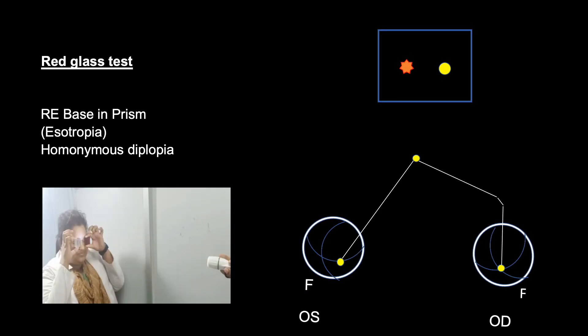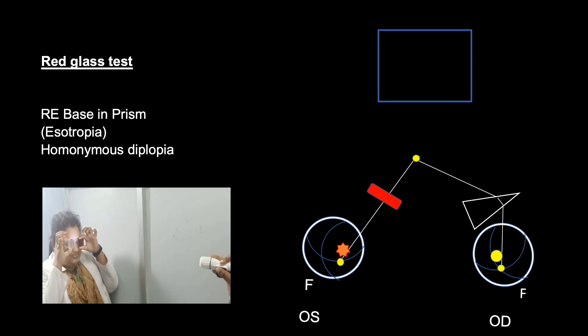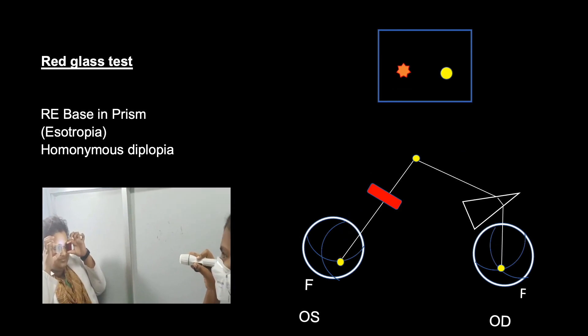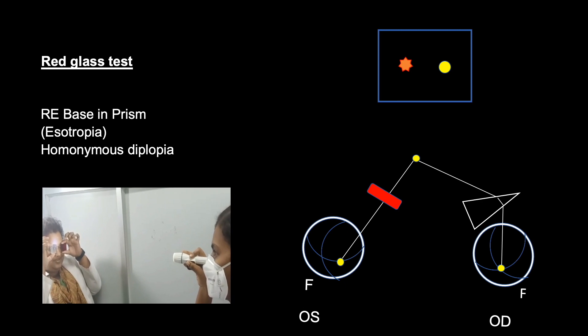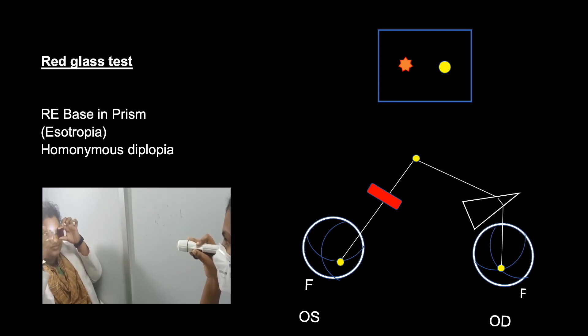The first one is the red glass test. Base in prism is placed in front of the right eye to make the eye esotropic and red glass in front of the left eye. We can see an uncrossed image of red light in front of the left eye and white light in front of the right eye.